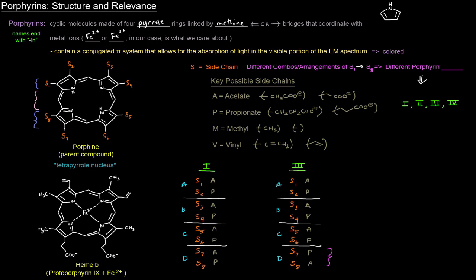Another thing to recognize about porphyrins is that they contain a conjugated pi system that allows for the absorption of light in the visible portion of the electromagnetic spectrum, which means they can be colored. To briefly explain that using organic chemistry: when you have double bonds they contain pi bonds, while single bonds only have sigma bonds. We have pi bond, sigma bond alternating throughout the molecule. When that happens, a molecule is said to be conjugated, and conjugated pi systems can absorb light and give you all kinds of colors.